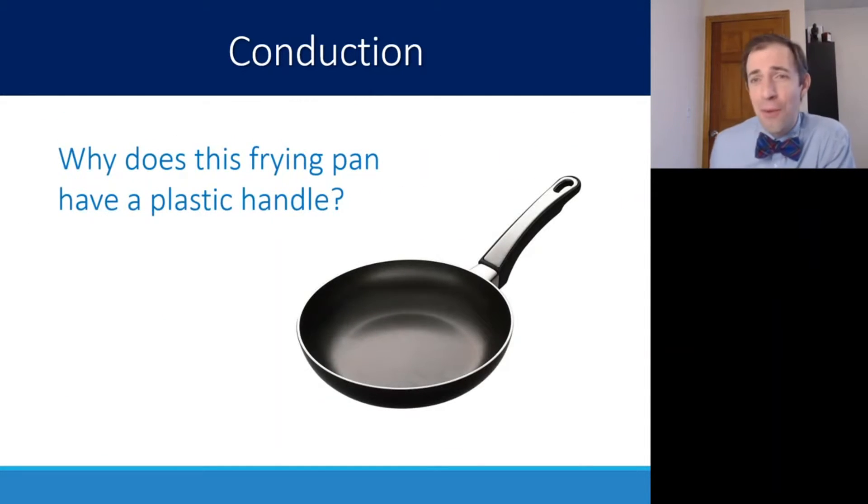Conduction is also important in cooking. It's the reason that this frying pan has a plastic handle. If you've ever tried to cook with an all metal pan that has all metal handles, if it's on heat for long enough, those handles can get pretty hot, even if they are not directly on the heat itself. So you might need to use a special oven mitt to grab onto those metal handles because metal is a good conductor of heat, but plastic is not.